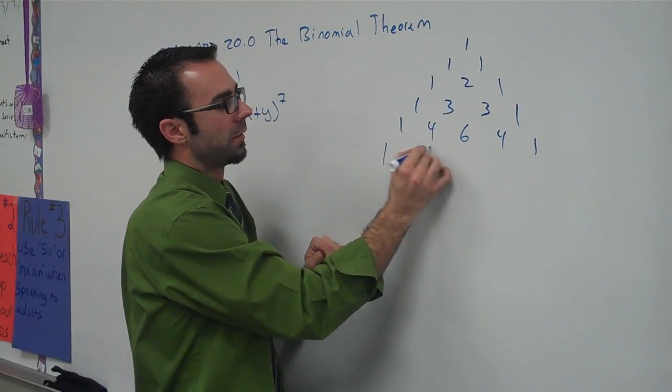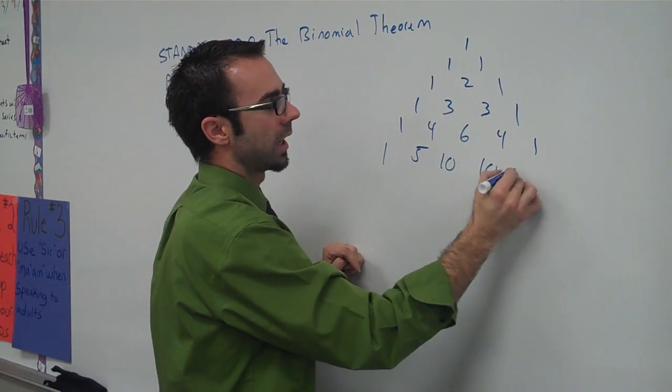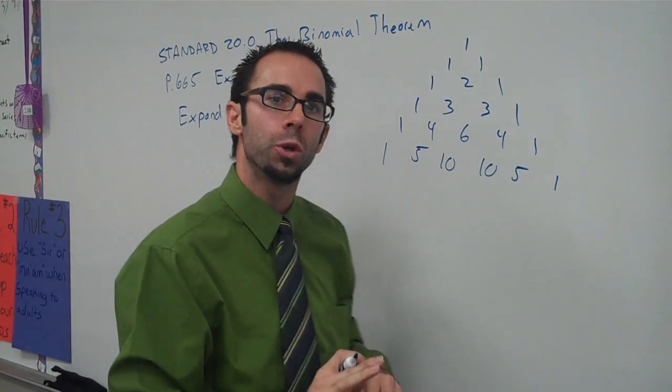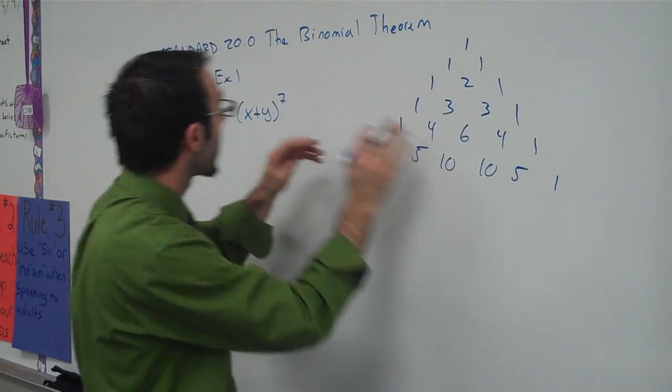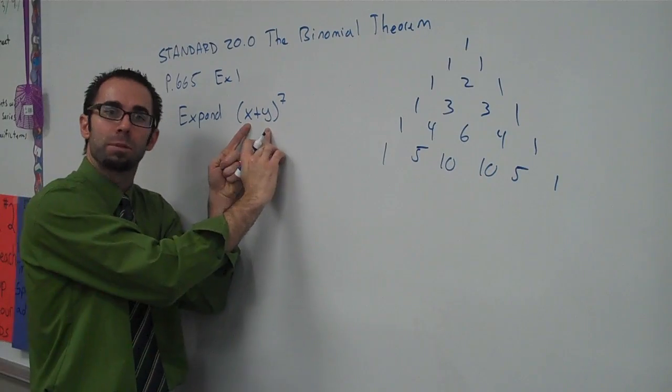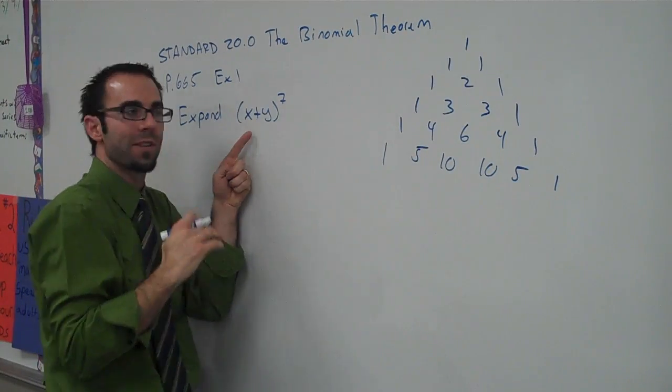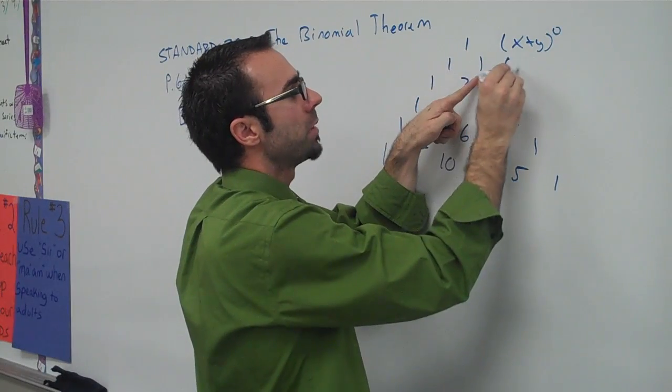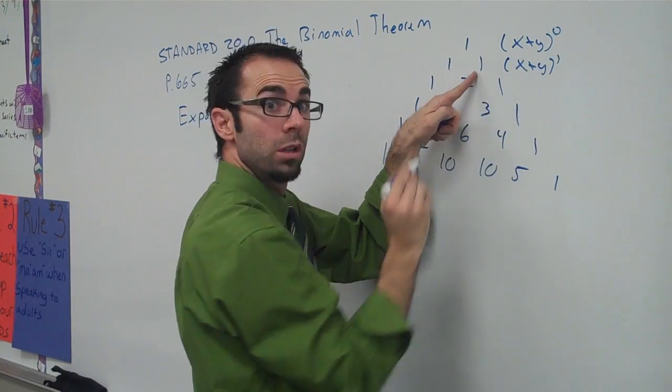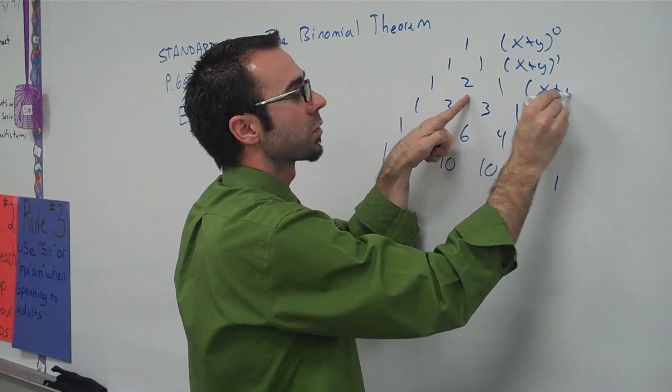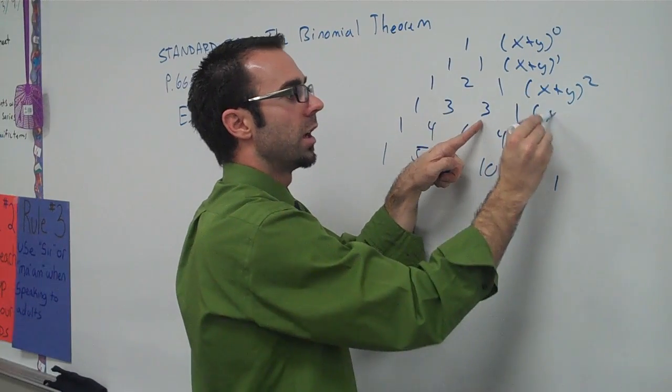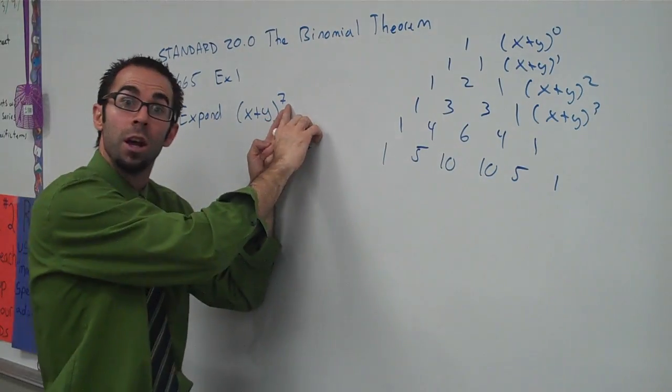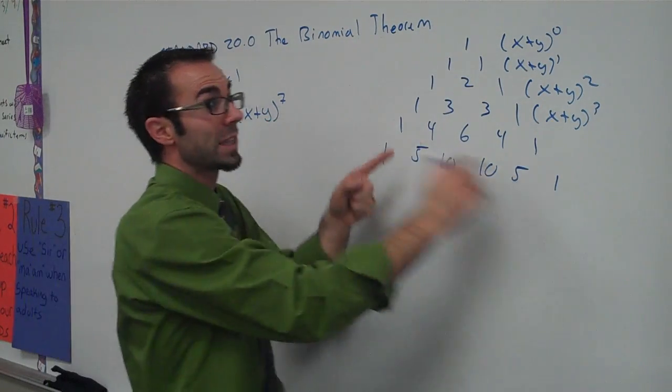And we can go ahead and continue this pattern here. One, five, ten, ten, five, and one. And the reason why we're doing this is because this is how we expand x plus y to the power of four, or five, or six, or seven, because this right here would stand for x plus y to the power of zero. This right here would be x plus y to the power of one. This would be x plus y to the power of two, x plus y to the power of three. And so obviously we have to get all the way until we get to seven.